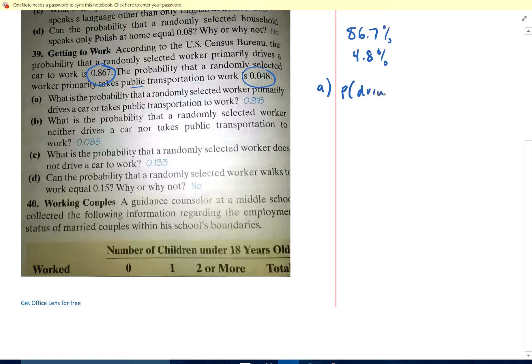Part A. Probability that they drive a car or take public transportation. Would be probability that you drive plus probability that you take public minus probability that you do both. But that's zero because you can't drive and take public at the same time. Now you might go some of each, but that's not what they're talking about here. They're talking primarily drive or primarily public. So that's 0.867 plus 0.048, which is 0.915.